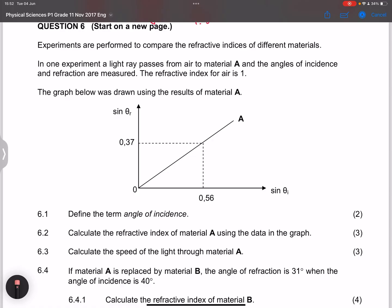So firstly, they give us this graph. They say the graph below was drawn using the results of material A. So firstly, they say to us, we must make or give a definition of the term angle of incidence.